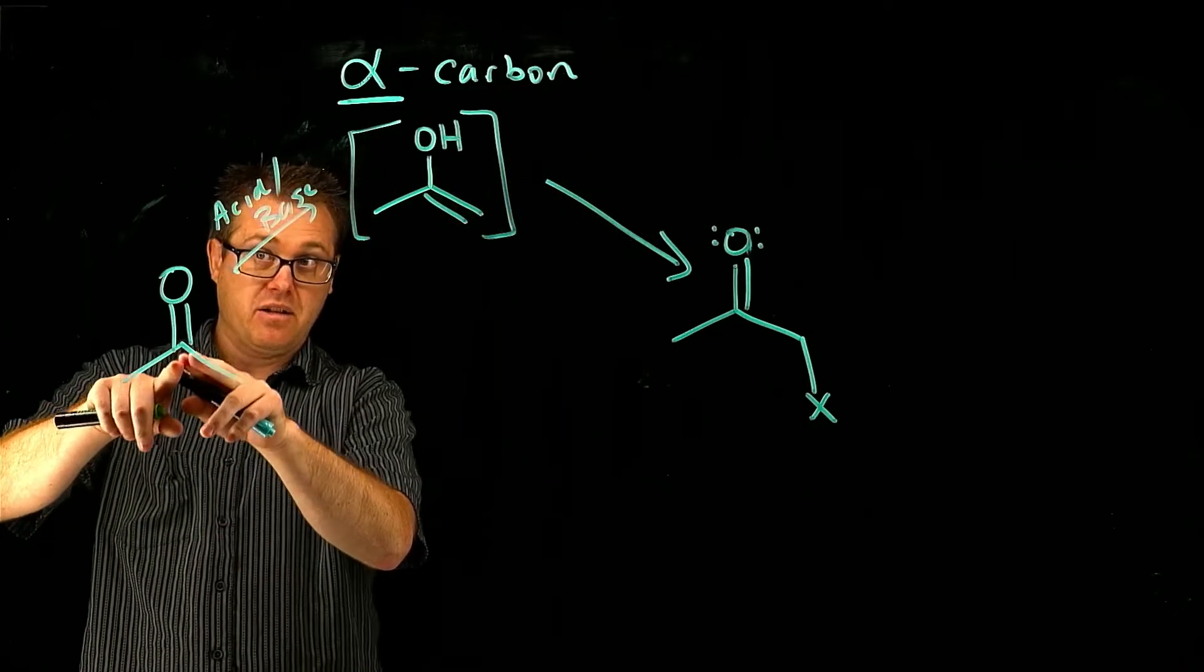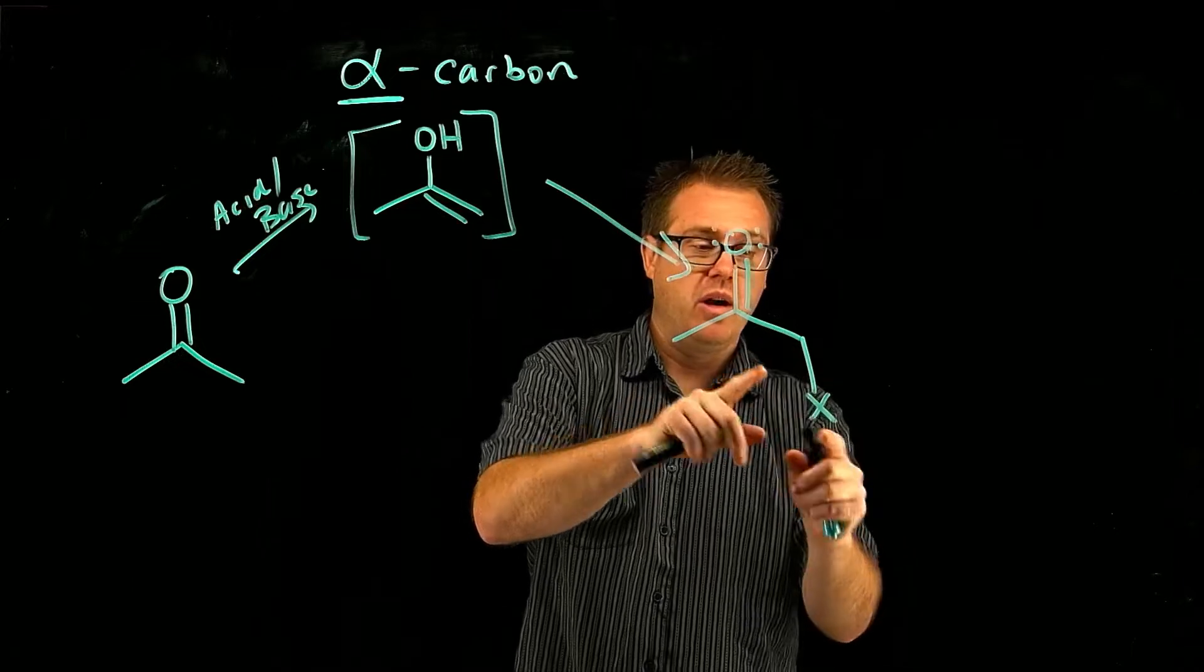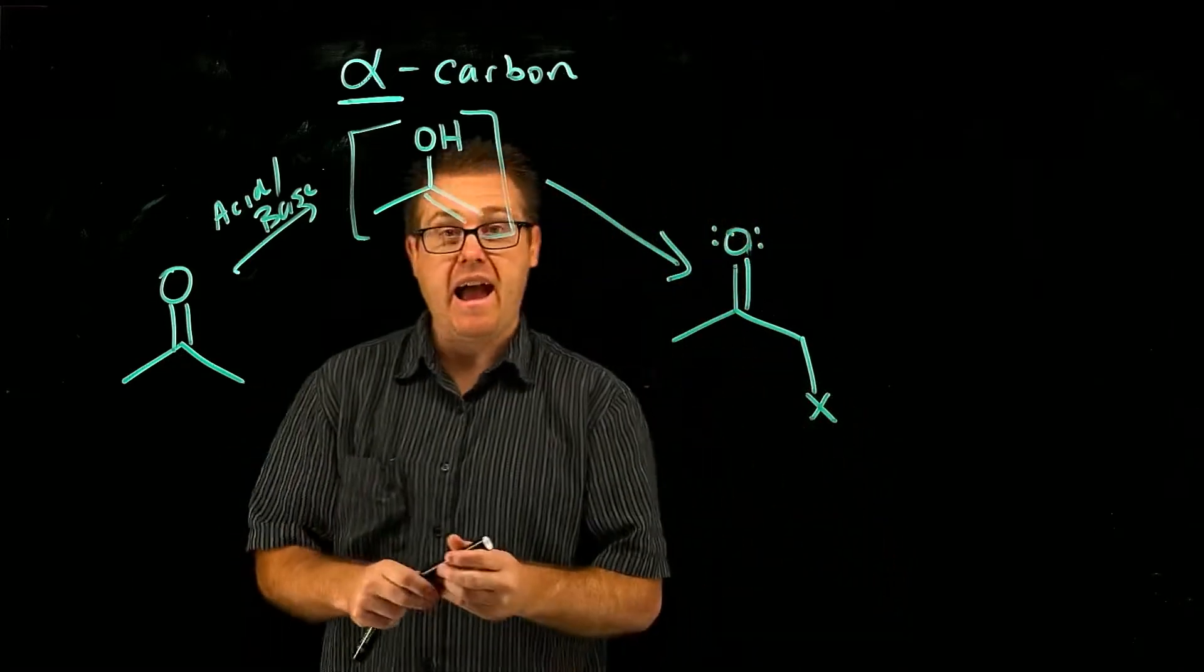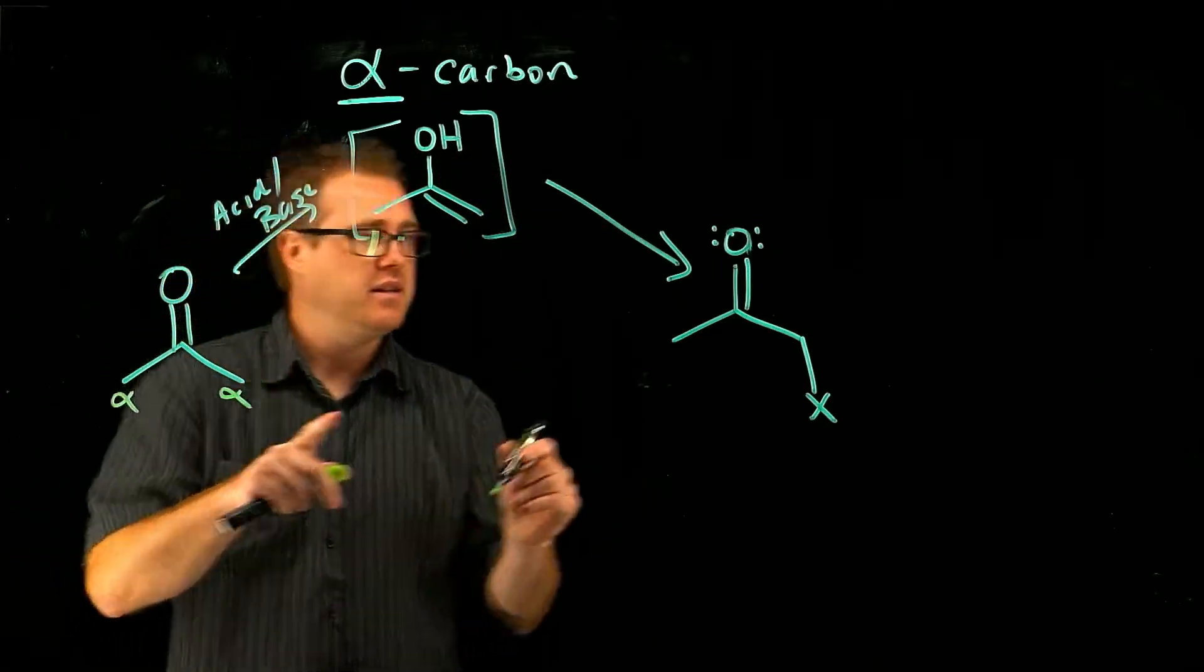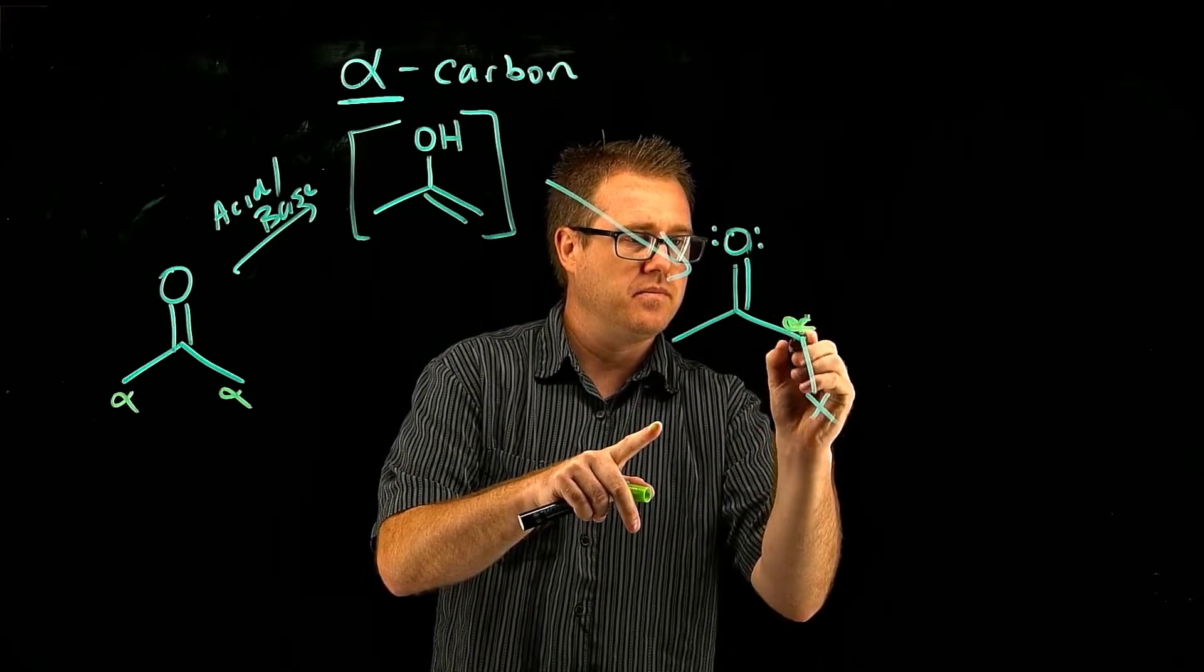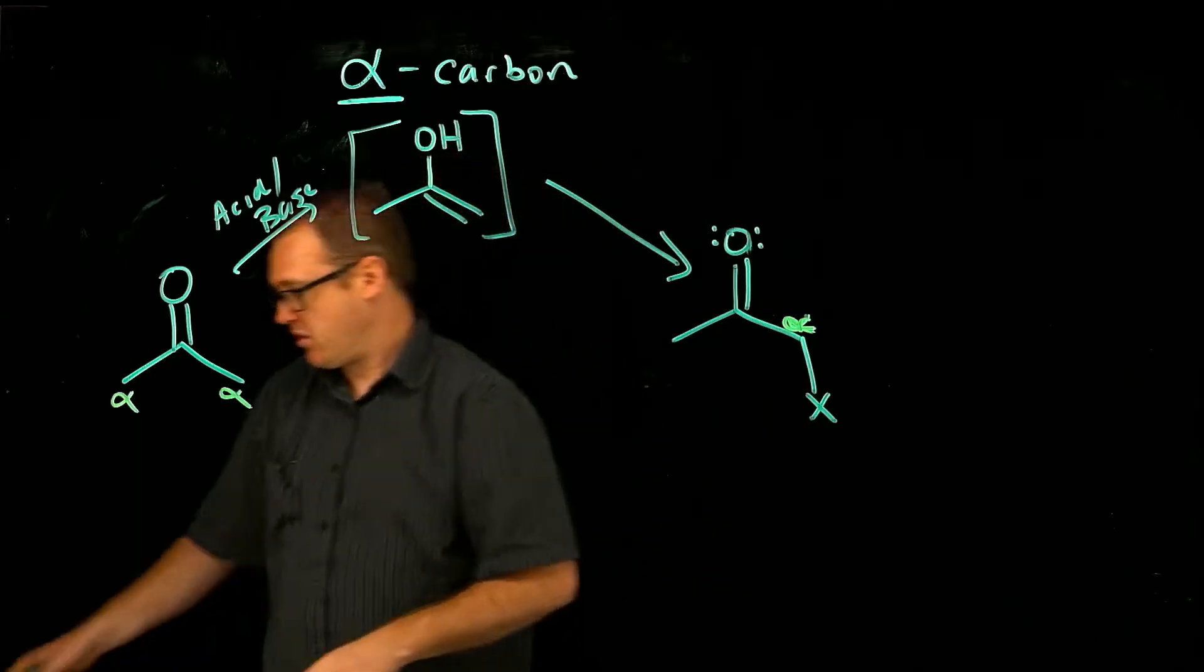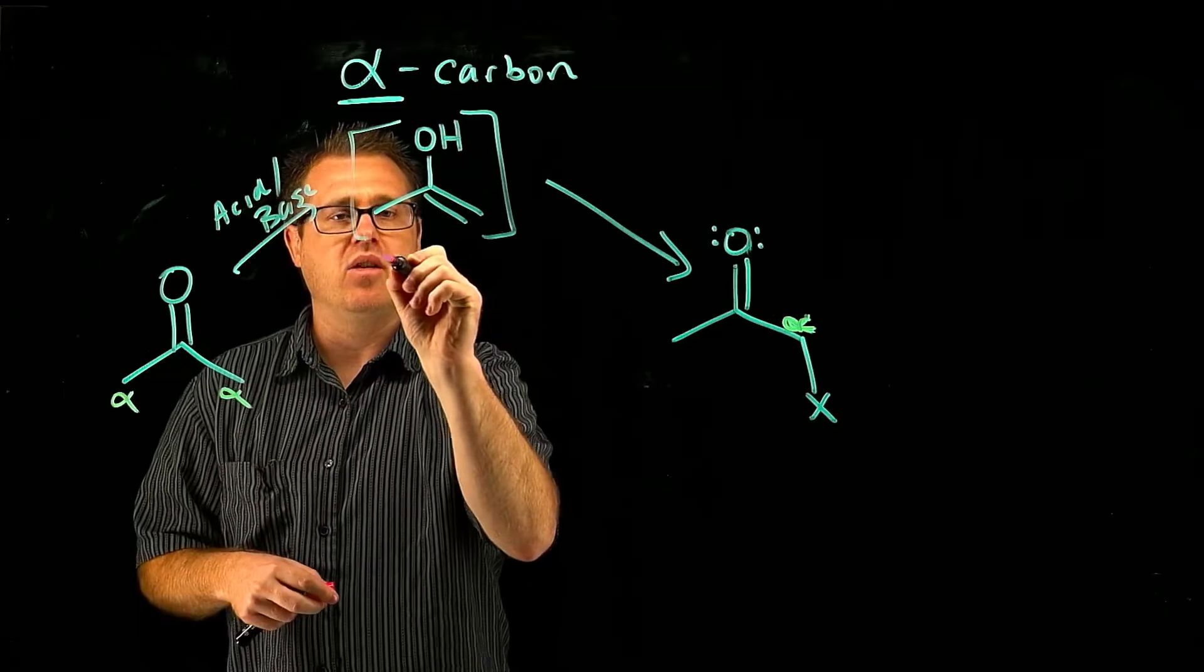Okay, so if we go first, you see here's the ketone, and there it is again, but what did we do? We attach something to the alpha carbons. So there's our alpha, there's an alpha, and there's our alpha. And we've attached something. This species right here, this intermediate, is called an enol.